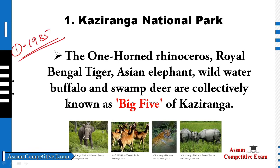Let me ask you a question — please comment. In 1985, this event in our history is very important. What happened in 1985? Please comment. The World Heritage Site was declared in 1985. The number two point: the National Park status was declared in 1974. This is related to Kaziranga National Park.